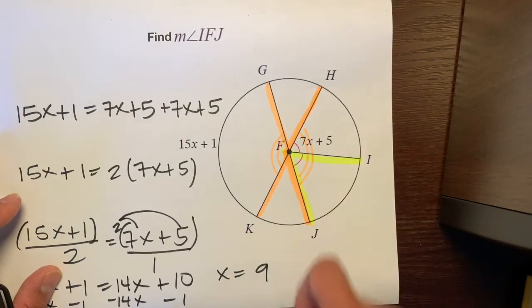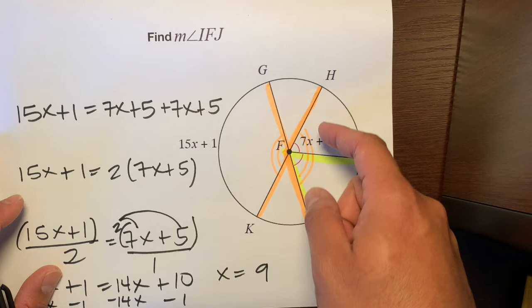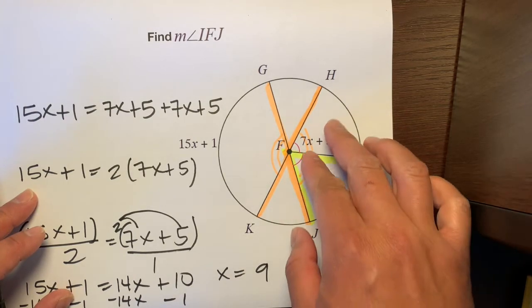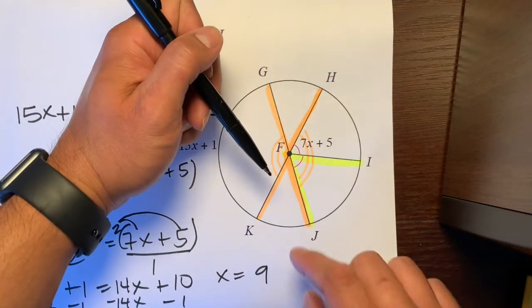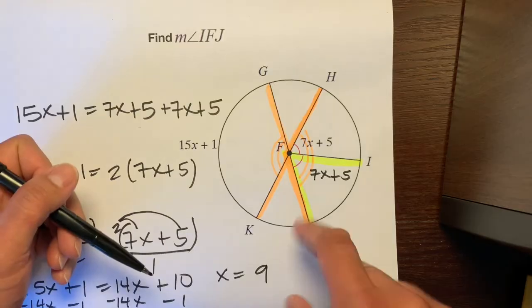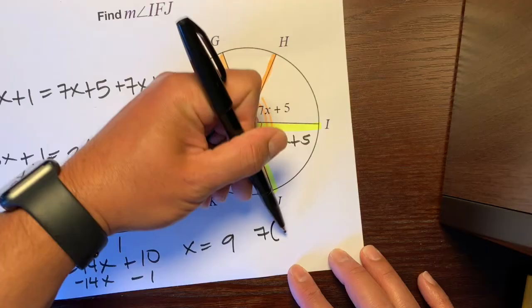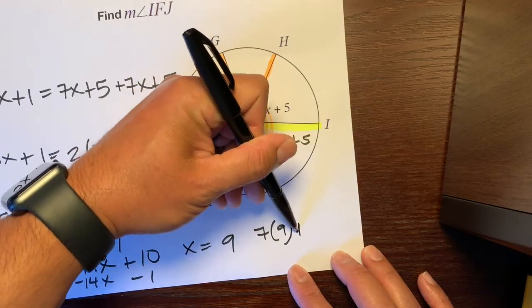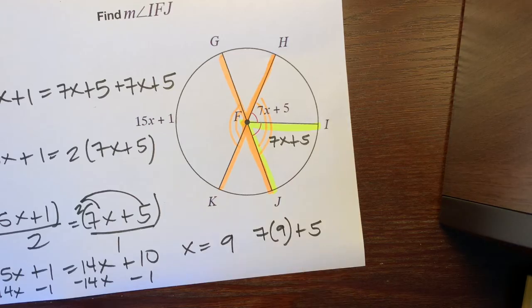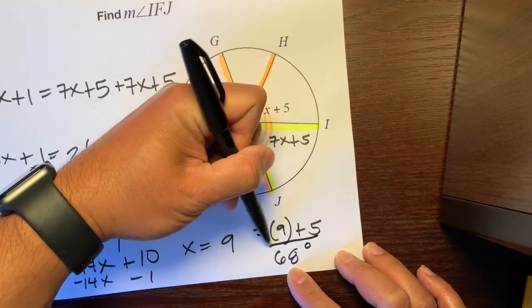We know that this angle is congruent to this angle. This is 7x plus 5. This has to be 7x plus 5. What we're going to do is plug that x into this x over here. 7 times 9 plus 5. 7 times 9 is 63 plus 5 is 68 degrees.